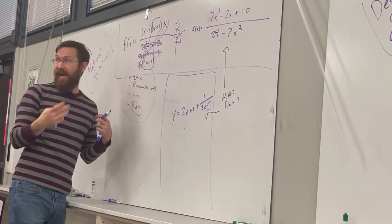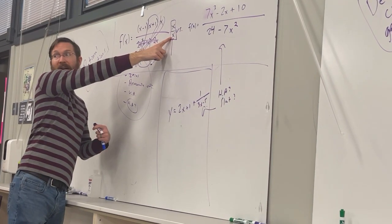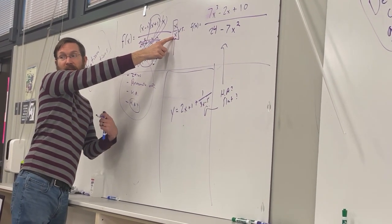So the only effect that those two factors have on this curve is by inserting a hole at the x value that would make this undefined.